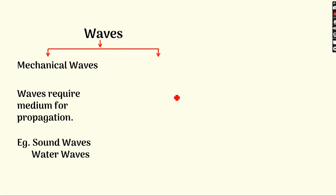You may have studied in lower classes that sound waves cannot travel through space, because sound requires a medium — fluids like gases and liquids. Sound can travel through gases and liquids, but if I go out of the atmosphere, there is no material medium. Therefore the wave cannot travel through that region. So sound waves cannot travel through vacuum — these are examples of mechanical waves.